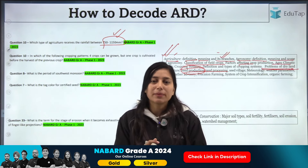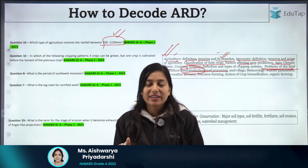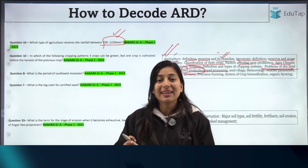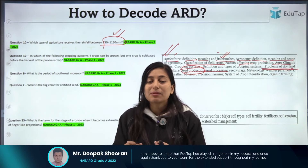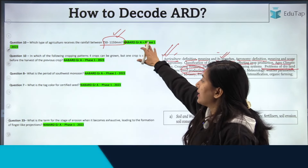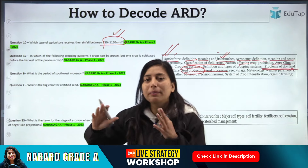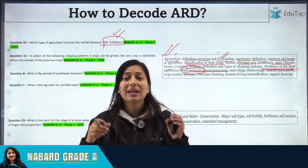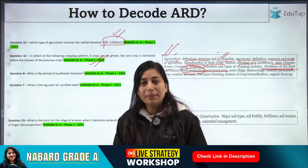For example, if you study dryland agriculture, you'll learn its categories based on the amount of rainfall received by a particular region. Similarly, when you study cropping patterns, you'll learn about inter-cropping, mixed cropping, row cropping, strip cropping, and relay cropping — and questions can come from any of these. It's straightforward.